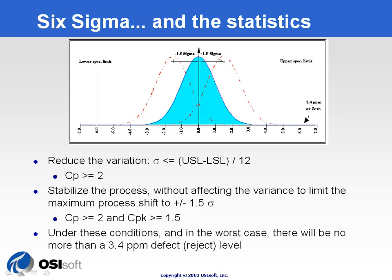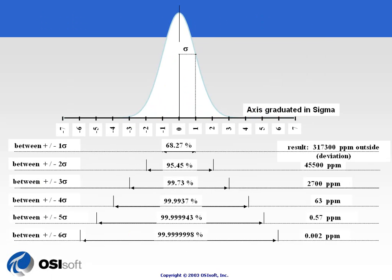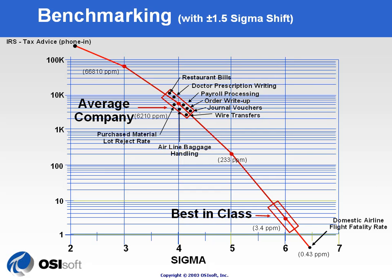If you go back to the slide on the normal distribution, you'll see that 3.4 ppm falls between the 4th sigma and the 5th sigma in terms of number of rejects. On this screen, we're showing the number of rejects achieved by different types of companies in relation to sigma level. The number of rejects is on the y-axis and translates to a sigma level on the x-axis. Most processes like restaurant billing, doctor prescriptions, and payroll processing are around 4 sigma quality, meaning they have quite a few rejects.